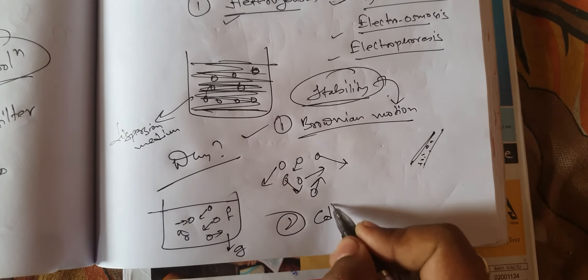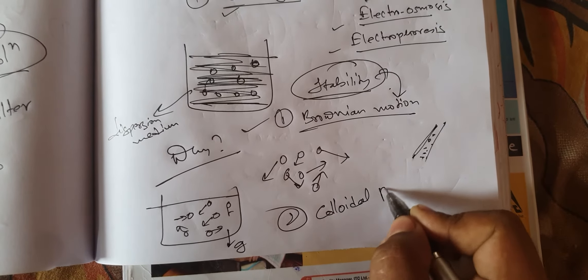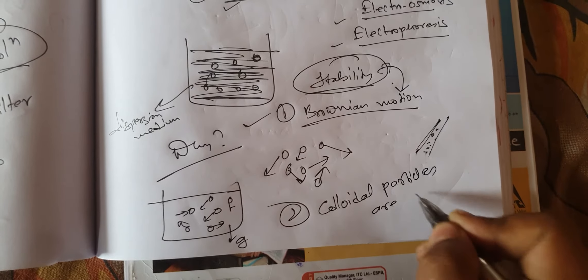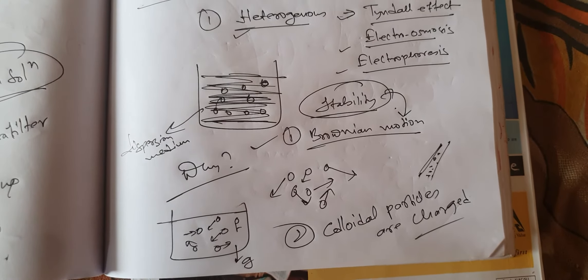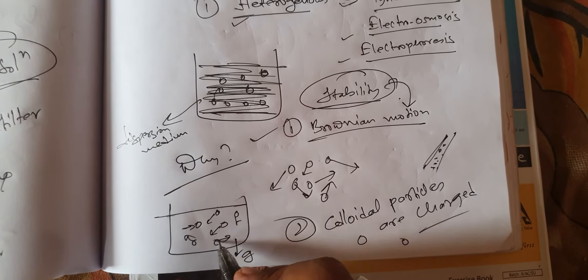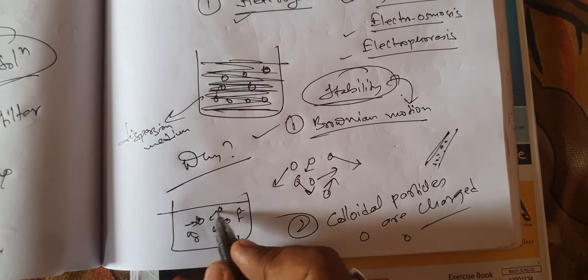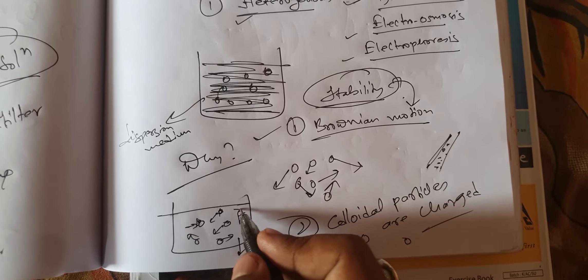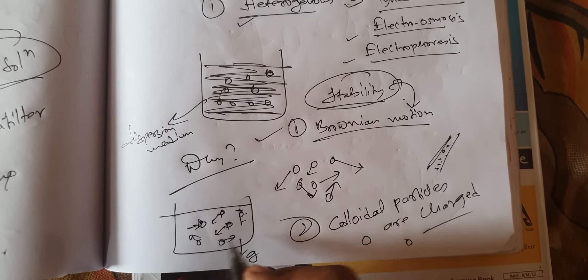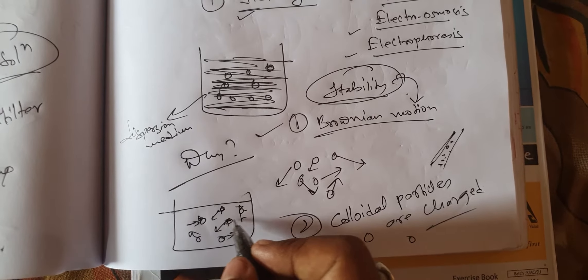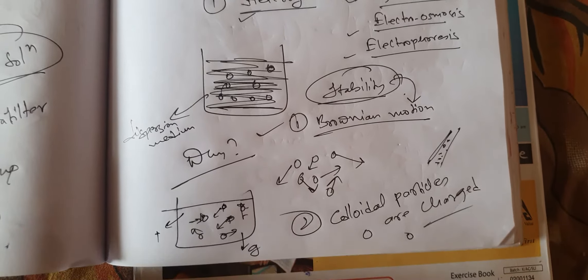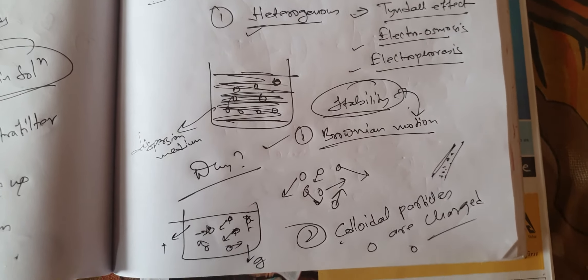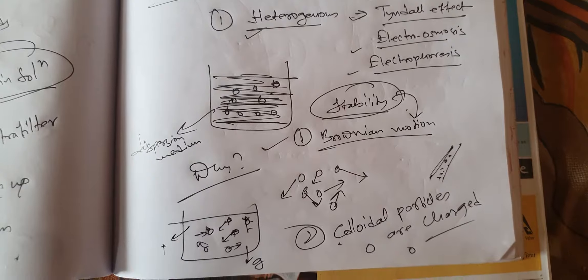The second reason for stability is that colloidal particles are charged. Because colloidal particles are charged, they repel one another. All colloidal particles are similarly charged — either all positively or all negatively charged. If the colloidal particles are positively charged, the dispersion medium particles will be negatively charged, and vice versa. This is what gives stability to the colloidal solution.